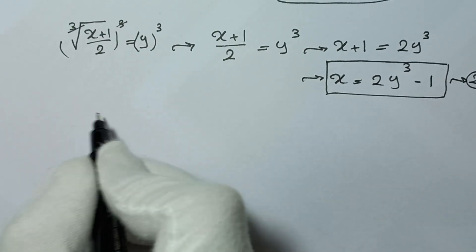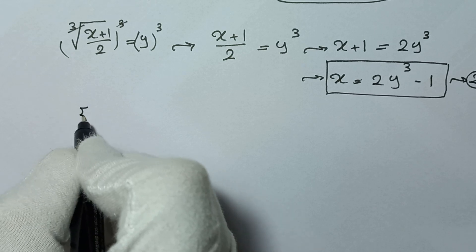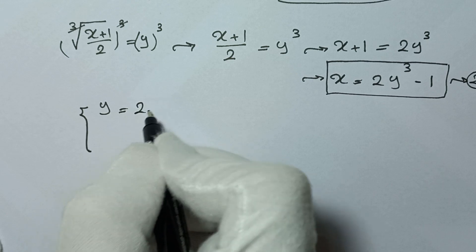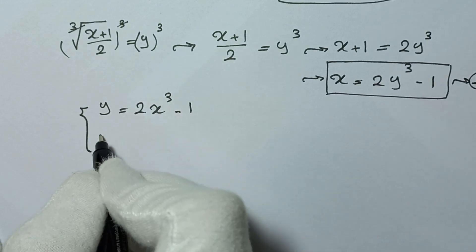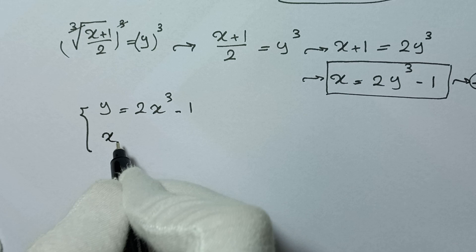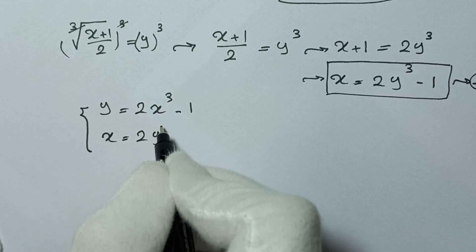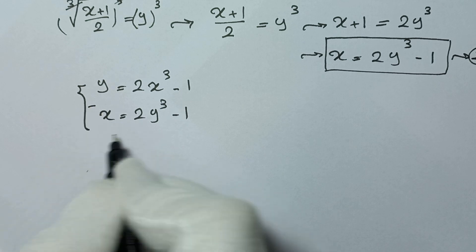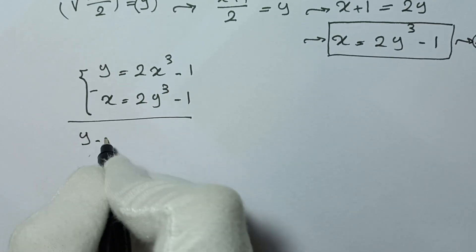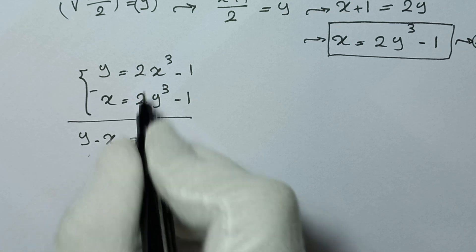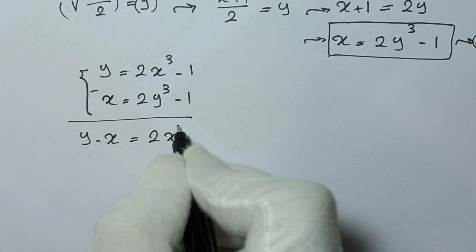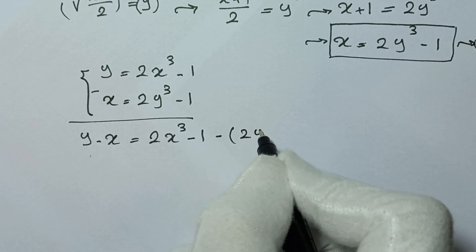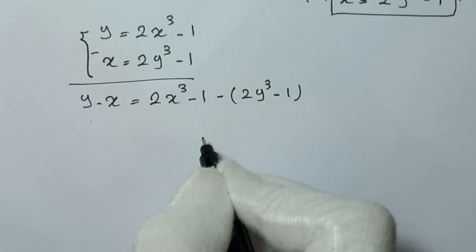From equation 1 and equation 2, we have: equation 1 is y equals 2x³ minus 1, and equation 2 is x equals 2y³ minus 1. In the next step, we subtract these two equations.